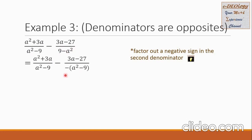So what happens is we copy the first rational expression and then the minus sign along with the numerator, but in the second denominator it becomes minus of the binomial a squared minus 9. Let us check: if we apply the negative sign inside the grouping symbol, the sign of a squared becomes negative a squared, and negative times negative 9 gives back positive 9. So the factoring is correct, and a squared minus 9 is now the same as our first denominator.